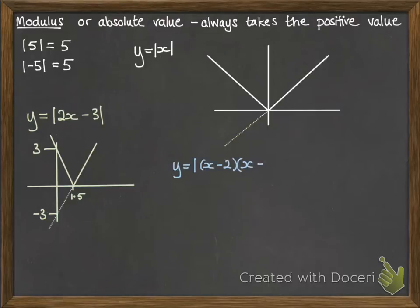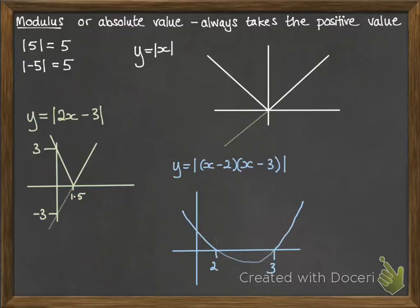And if we go one step further for a quadratic, so we have the graph of y equals the modulus of (x minus 2)(x minus 3). So we've got our critical values of 2 and 3 for our quadratic. So it would look like this, where we have the bit that goes under the x-axis will then get reflected to be positive values.